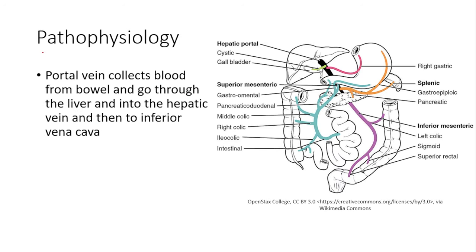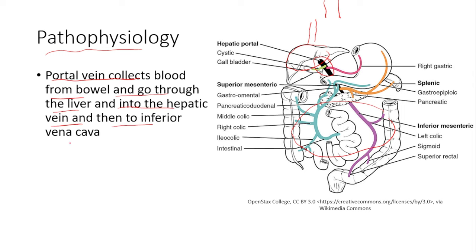Regarding the pathophysiology of portal hypertension — here is the portal vein. It collects blood from the bowel and takes it into the liver. The liver removes toxins from the blood and then passes the blood into the hepatic vein and into the inferior vena cava.